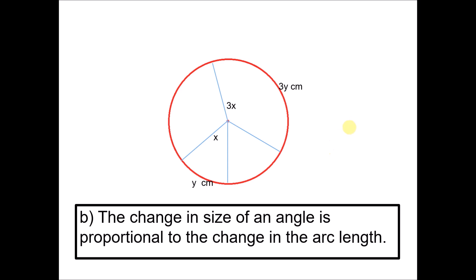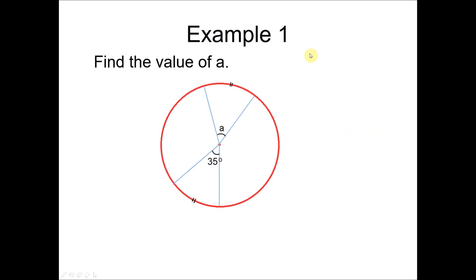Let's look at the examples. Example number 1: find the values of a. You can see that the arc length of the two arcs are the same. According to property a, when the arc lengths are the same, the angles subtended will have the same value. So a equals 35.